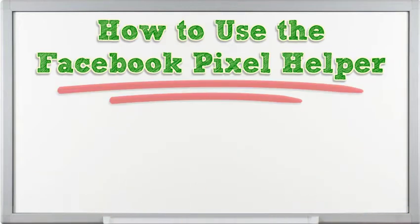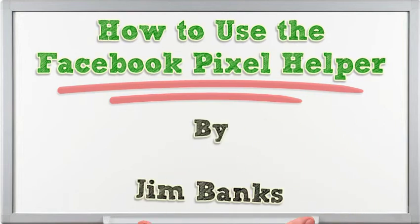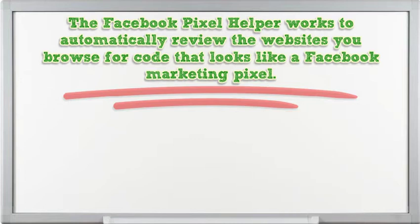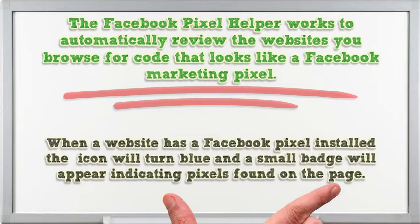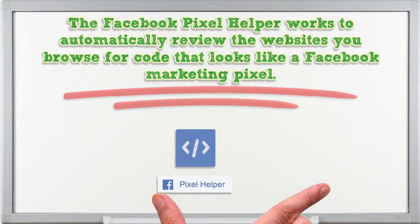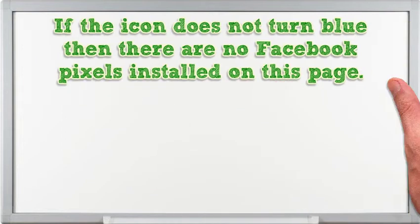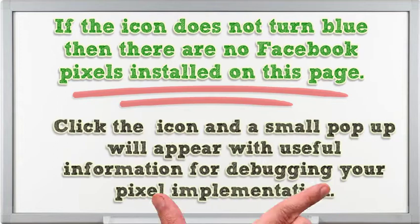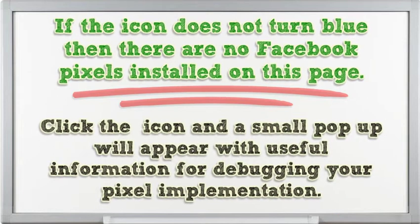How to use the Facebook Pixel Helper. The Facebook Pixel Helper works to automatically review the websites you browse for code that looks like a Facebook marketing pixel. When a website has a Facebook Pixel installed, the icon will turn blue and a small badge will appear indicating pixels found on the page. If the icon does not turn blue, then there are no Facebook Pixels installed on this page. Click the icon and a small pop-up will appear with useful information for debugging your pixel implementation.